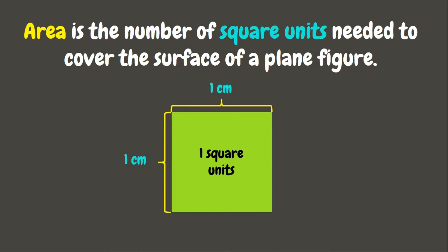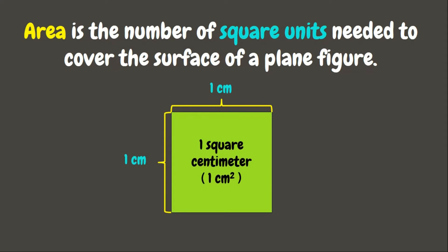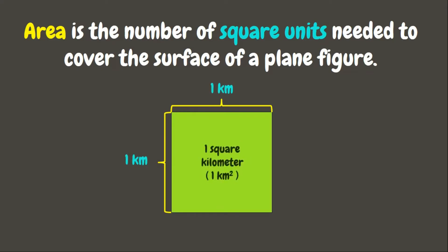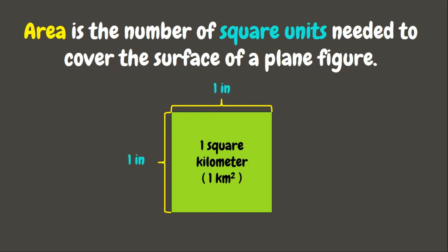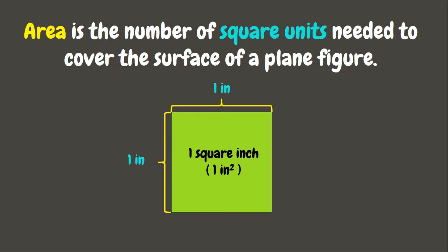If its side measures one centimeter, its area will be one square centimeter. If it's one kilometer, it will be one square kilometer. Or if it's one inch, it will be called one square inch, and so on.